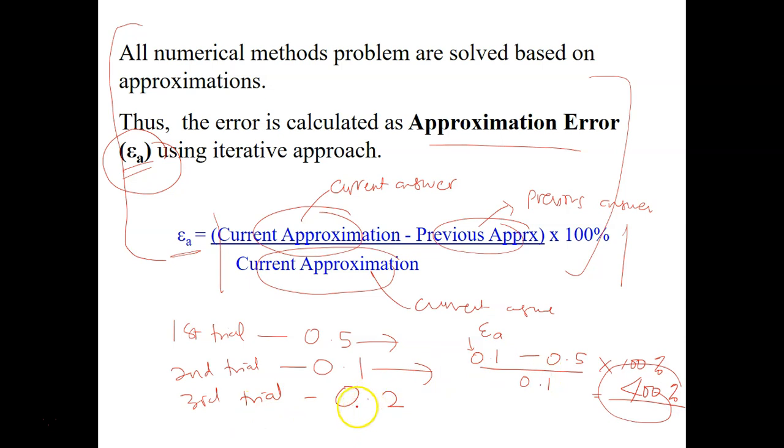And if you move on to the third calculation, you use the same procedure. Current is 0.2 minus 0.1 divided with 0.2. So that's how you use your approximation error calculation.